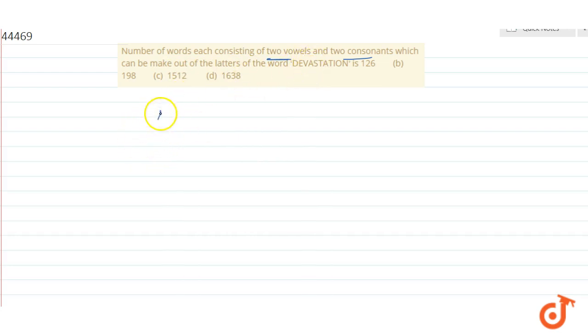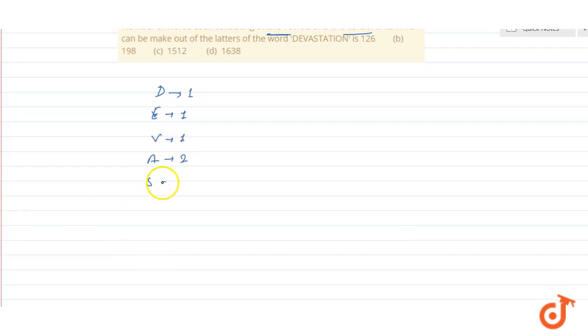P appears one time, K appears one time, V appears one time, A appears two times, S appears one time, T appears two times, I appears one time, O appears one time, and N appears one time.